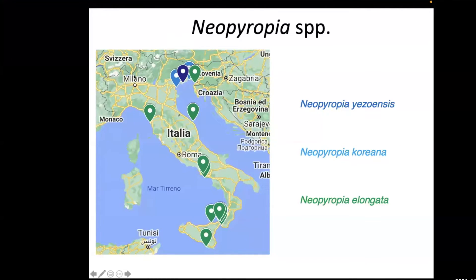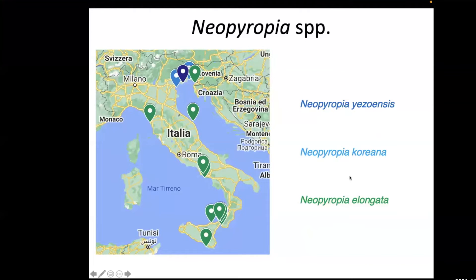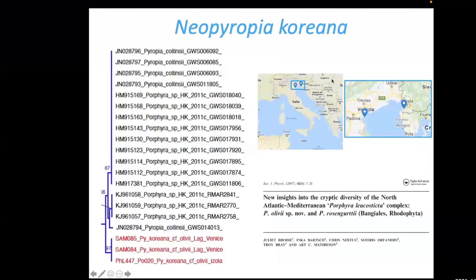Neoporphyra species with blade thalli are the most common Bangiaceae in Italy and the Mediterranean. We found three species: Neoporphyra iodens, Neoporphyra koreana, and Neoporphyra elongata, which I will show in detail. Neoporphyra koreana sequences were derived from samples collected in Slovenia and Venice, shown on the map.